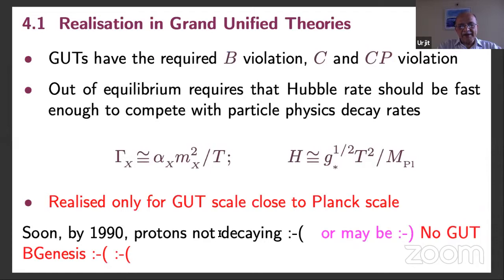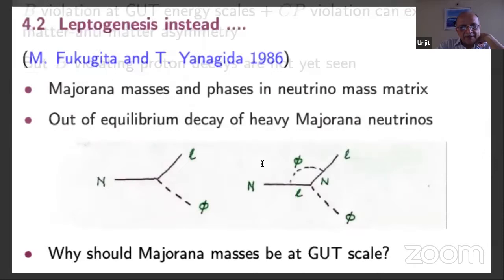It would be realized only if you have gut scale and close to Planck scale, not at low temperatures. But as we know, by 1990s, it became increasingly clear that protons are not decaying in that Super Kamiokande experiment. And till date, SK has not reported any proton decay. So this kind of baryogenesis is not going to work is by now sort of clear.